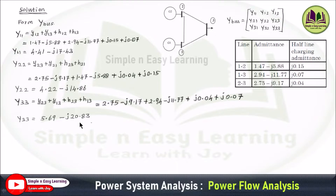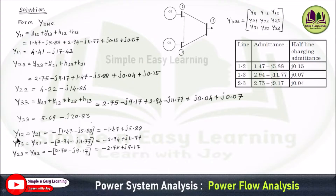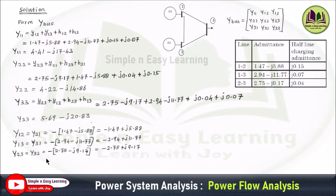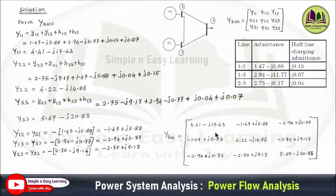Now we determine the off-diagonal elements of the Y-bus matrix. Y12 = Y21 = negative of the admittance between buses 1 and 2 = −1.47 + j5.88. Y13 = Y31 = negative of the admittance between buses 1 and 3 = −2.94 + j11.77. Similarly, Y23 and Y32 are determined, and the full 3×3 Y-bus matrix is formed.